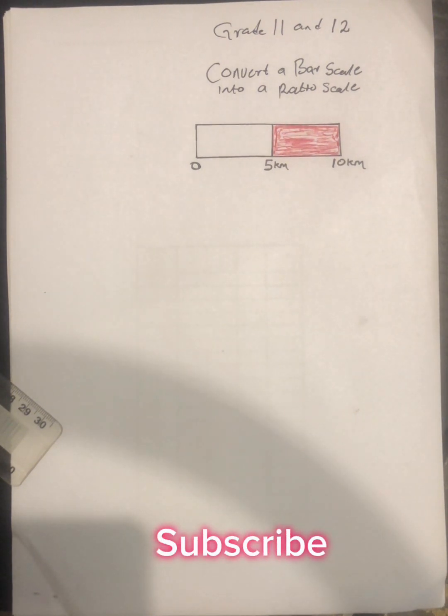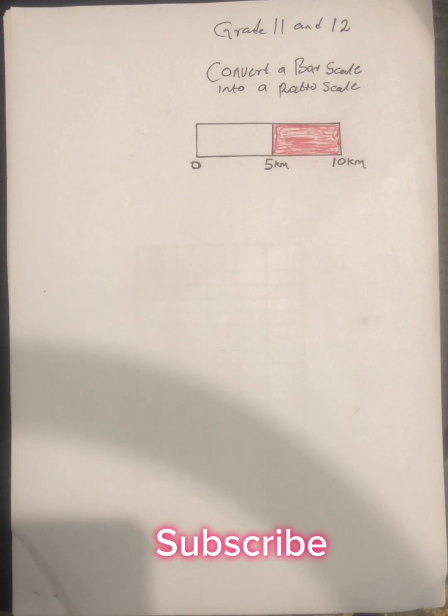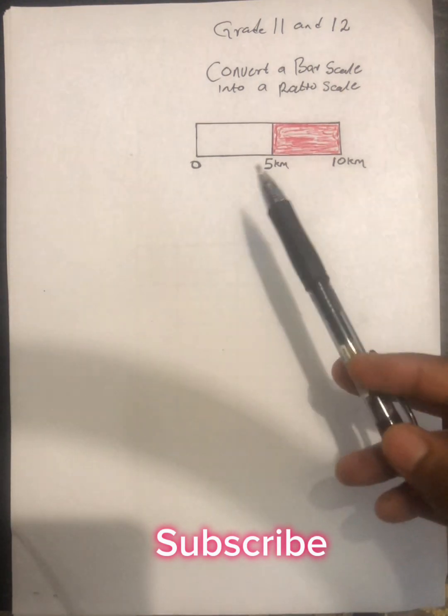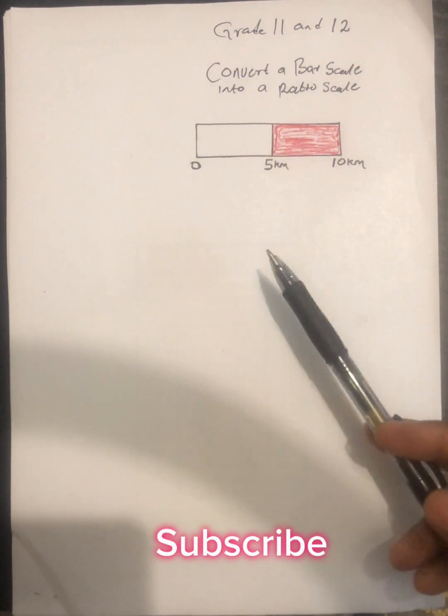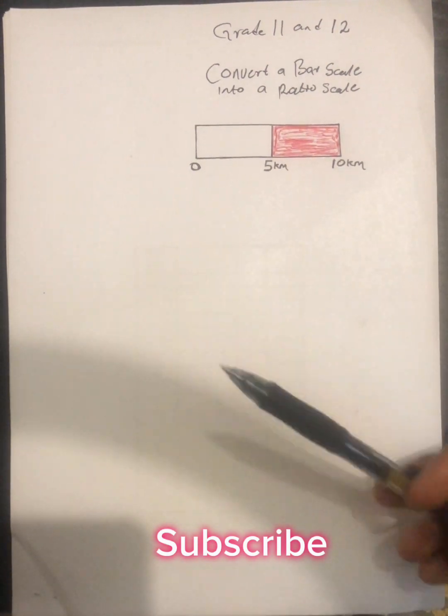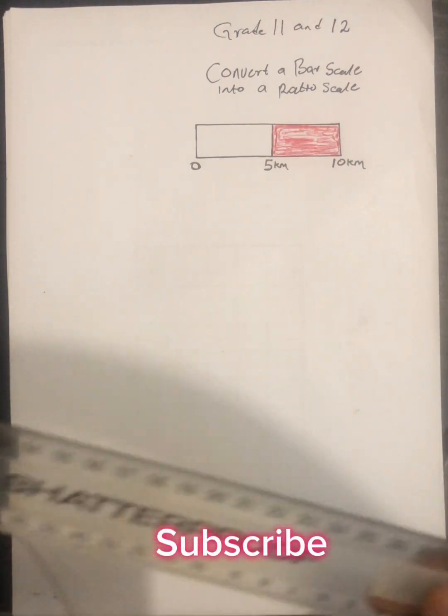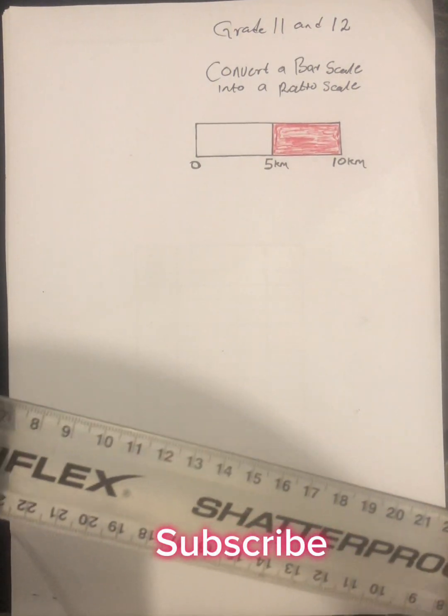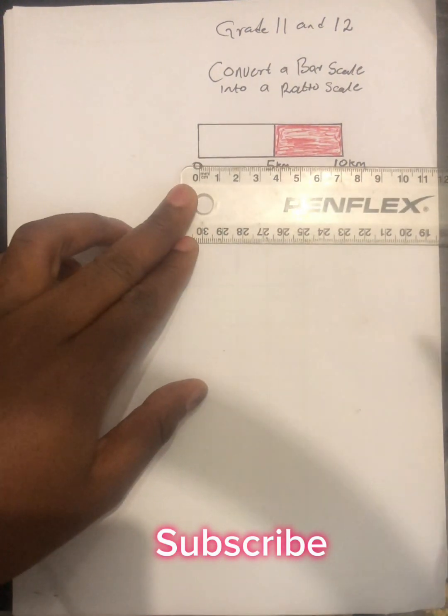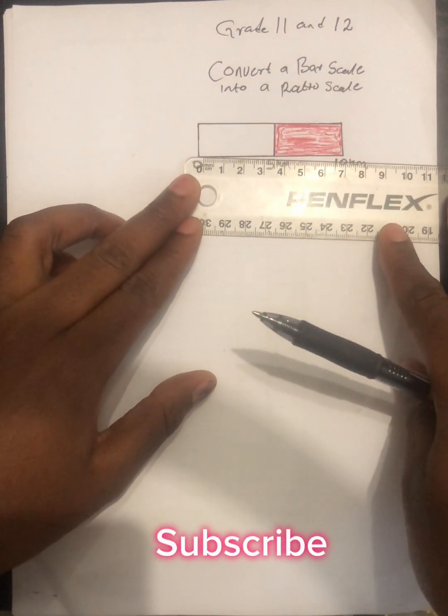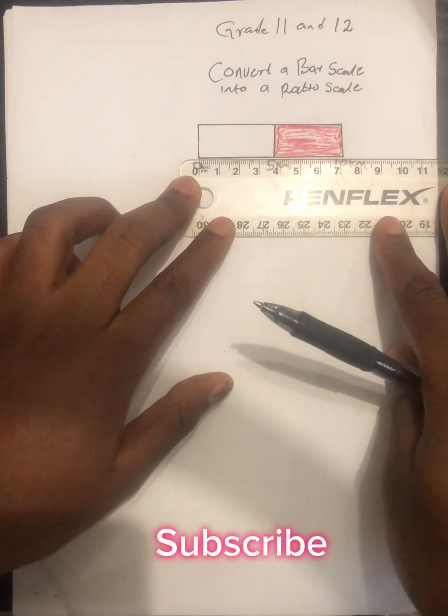This is very simple. What you need to do is make sure that you have your ruler because you know that the actual distance here is 10 kilometers. The actual distance of this bar scale is 10 kilometers. So what you need to do, you must take a ruler and measure the map distance using this ruler. That's the only thing that you need to do.